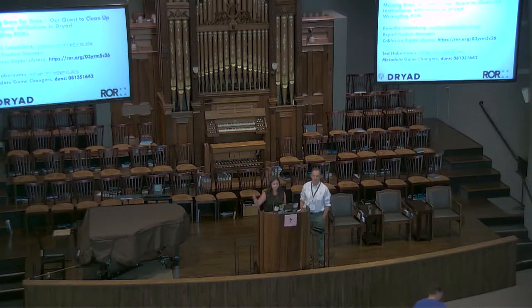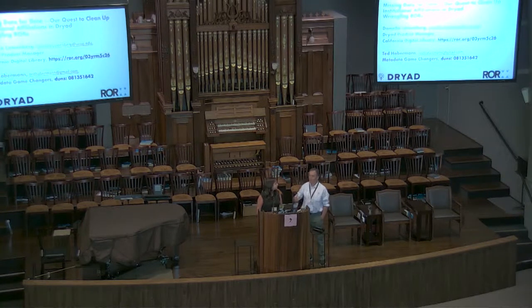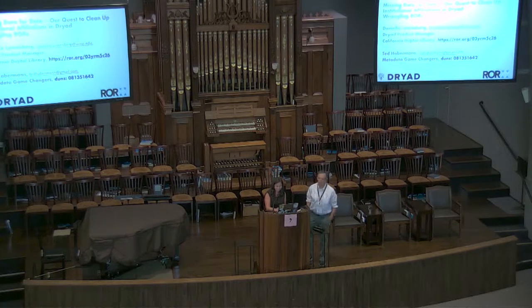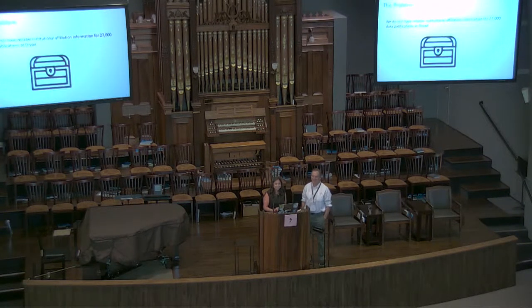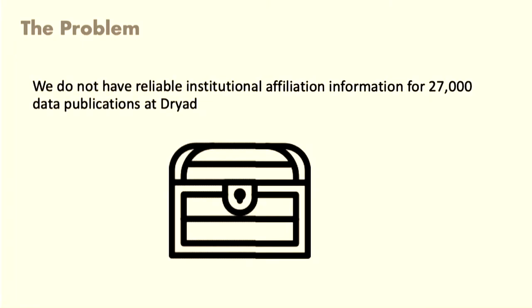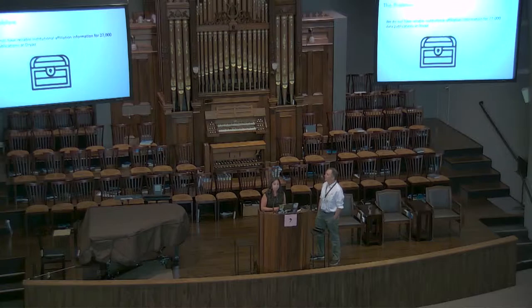Ted's put in here the ROR for CDL, and no ROR for Metadata Game Changers — we've done some, but it's a traditional identifier that we're trying to work into the ROR. So what we're going to talk about is this problem: Dryad has 27,000 data publications, and because of different standards around publishing articles and data without a standard for institutions, we never actually collected the institutional affiliations for any of the authors for these data publications.